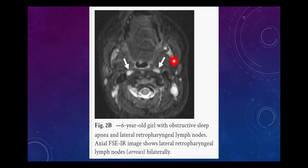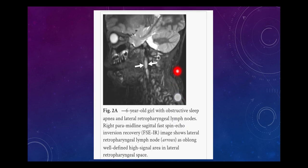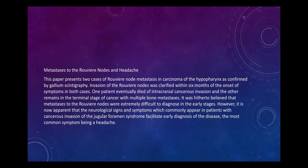This is a six-year-old girl with obstructive sleep apnea and lateral retropharyngeal nodes. The image shows lateral retropharyngeal lymph nodes bilaterally in the retropharyngeal space, seen as oblong, well-defined, high-signal areas in the lateral retropharyngeal space.